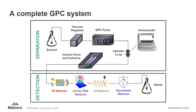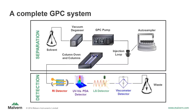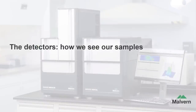Shown here is a schematic for a complete GPC system. The columns and chromatography process we described are located in the center of the image. The system components in line prior to the columns are necessary parts that keep the system running, such as a mobile phase reservoir, a vacuum degasser to remove air from the mobile phase, the pump to maintain mobile phase flow, and the injection loop with optional autosampler that introduces the sample mixture onto the column set. Now that we've injected our sample and used chromatography to separate our mixture, we need a way to observe the individual components present — which leads us to the detectors, how we see our samples.